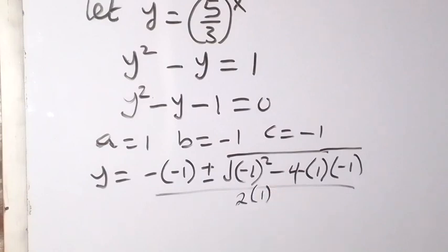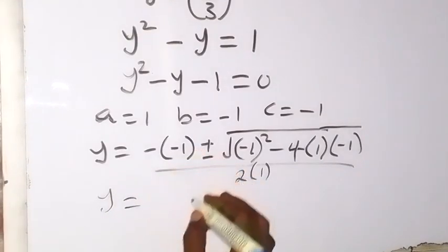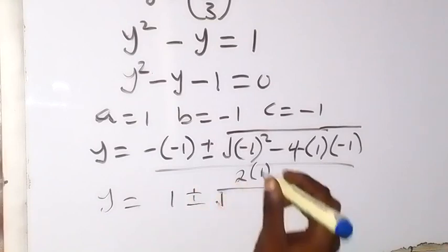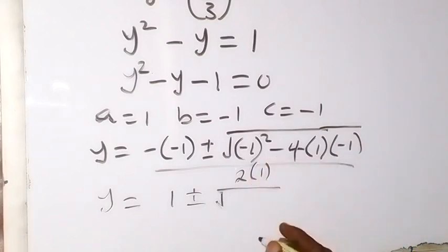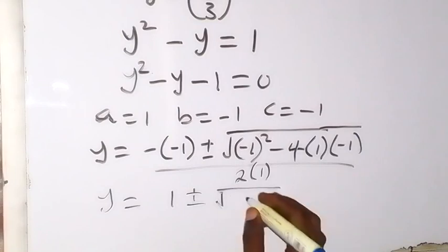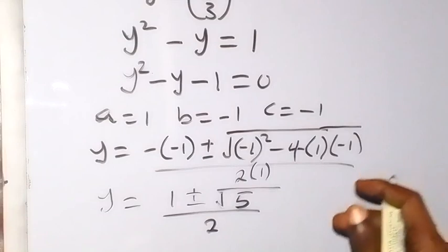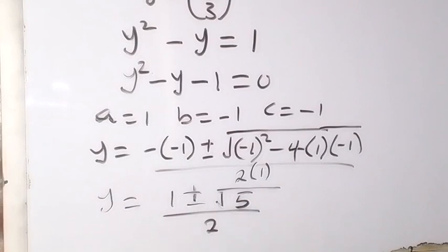From there we can see that y equals 1 plus or minus the square root of (minus 1 squared is 1, then minus (minus 4) gives plus 4, so 1 plus 4 equals 5). That's root 5, all over 2. So we have two possible solutions: (1 plus root 5) over 2, or (1 minus root 5) over 2.